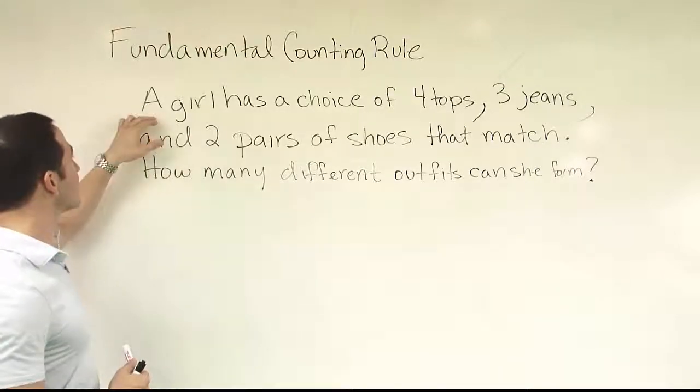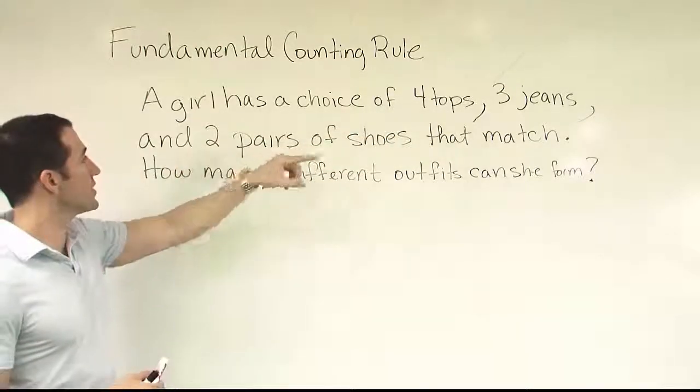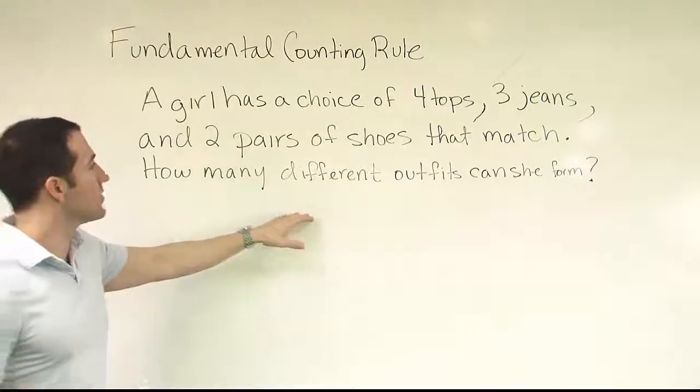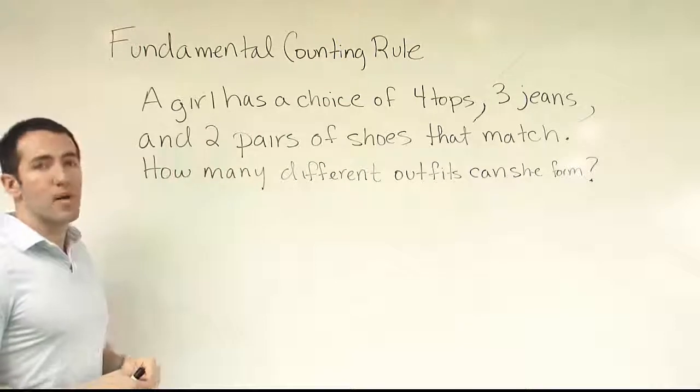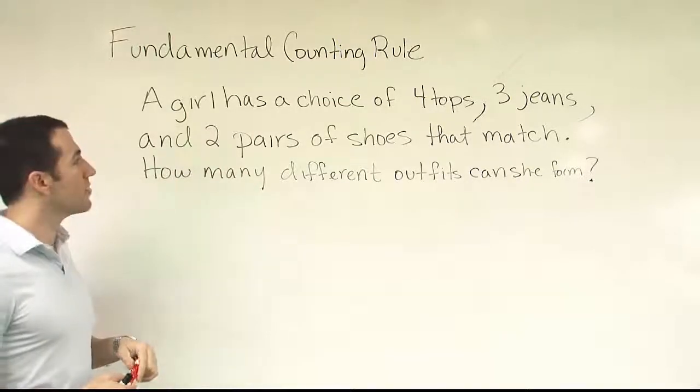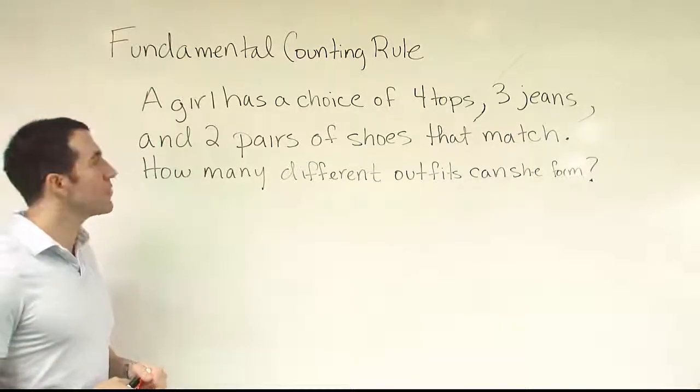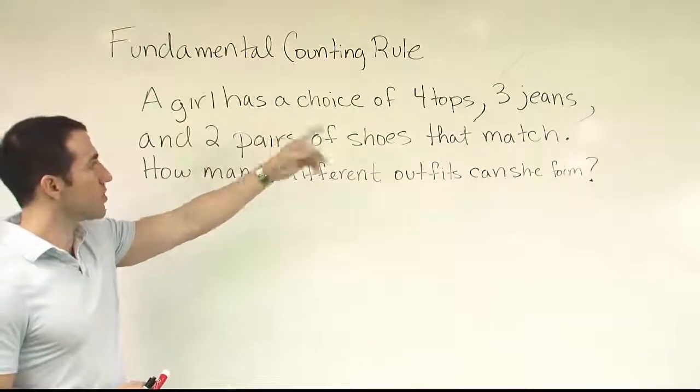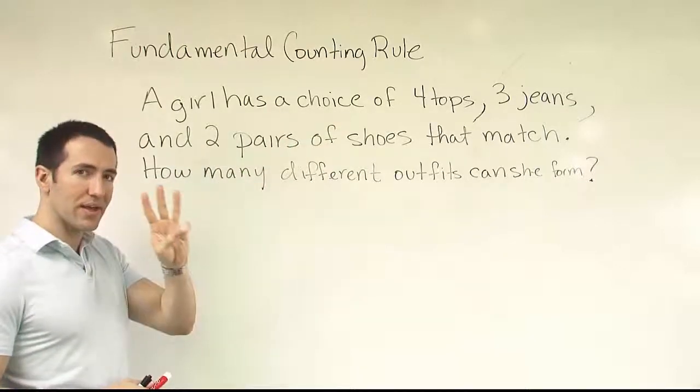So let's read the problem together. It says a girl has a choice of four tops, three jeans, and two pairs of shoes that all match. How many different outfits can she form? The way you would use fundamental counting rule to solve this problem is you want to break the problem down into steps. You want to think about if this girl wants to get dressed in the morning, what steps does she have to go through to do that? Relevant to the problem, she's got to pick a top, pair of jeans, and a pair of shoes.